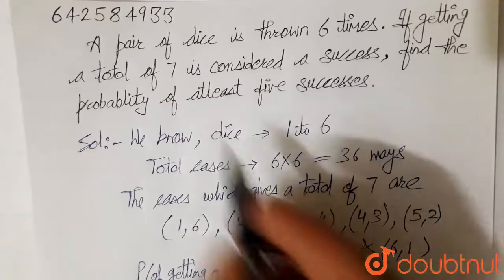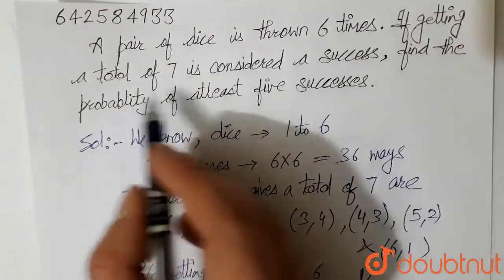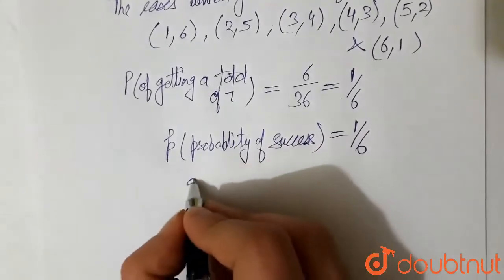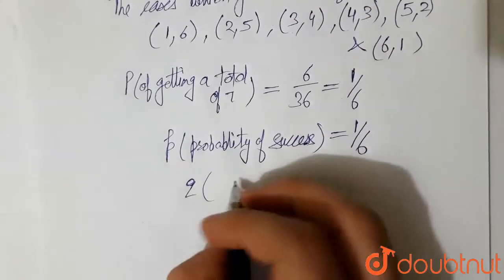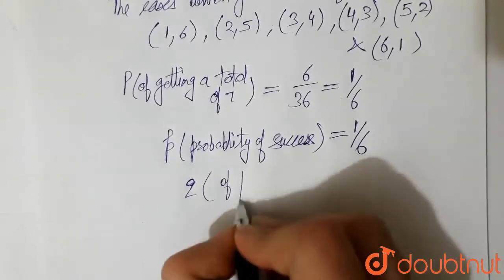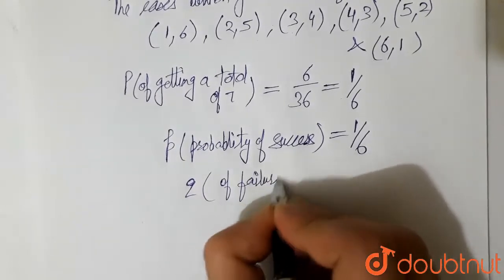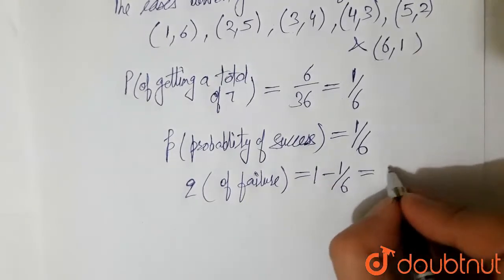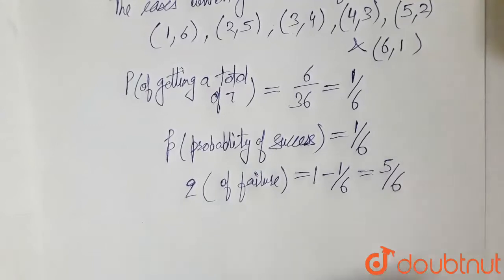So total, getting a total of 7 is considered a success. So we have denoted that small p. So probability of failure would be 1 minus 1 by 6. This becomes 5 by 6.